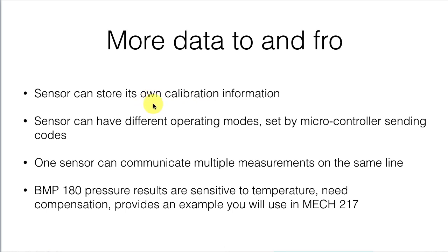One big advantage of I2C is that sensors can store their own calibration information. A factory calibration can be saved right on the sensor chip, so the first thing you do is ask the sensor for its calibration parameters to convert raw data into correct values. It also allows different operating modes and multiple measurements from one sensor — for example, the BMP sensor provides pressure and temperature, while the newer BME-280 provides temperature, pressure, and relative humidity, all from the same instrument.